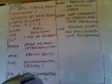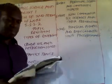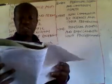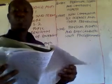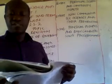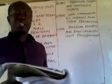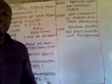Moving on, we discussed environmental hazards. We defined an environmental hazard as a dangerous or harmful event that can cause injury, loss of life, or damage to the environment or property. Examples we gave include soil erosion, flooding, bush burning, and desertification, to mention a few.